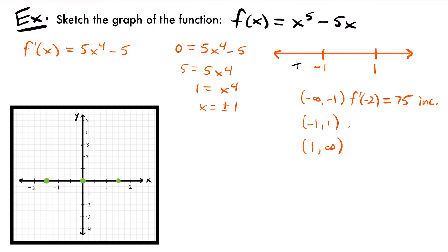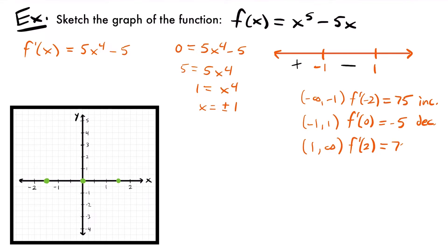For the second interval from negative 1 to 1, I'll pick 0: f prime of 0 equals negative 5, because the 5x to the fourth term becomes zero. That's a negative value, so our function is decreasing on that interval. For the third interval from 1 to infinity, I'll plug in positive 2: f prime of 2 equals positive 75 again. That's a positive value, so our function is increasing on that interval.